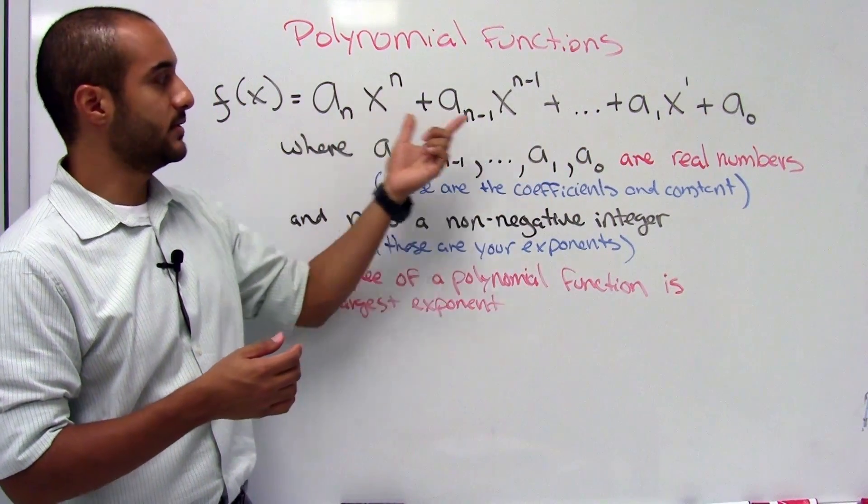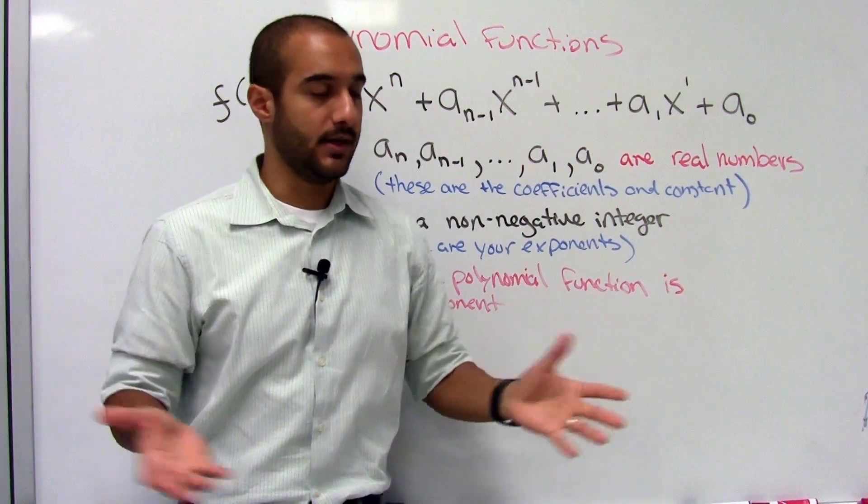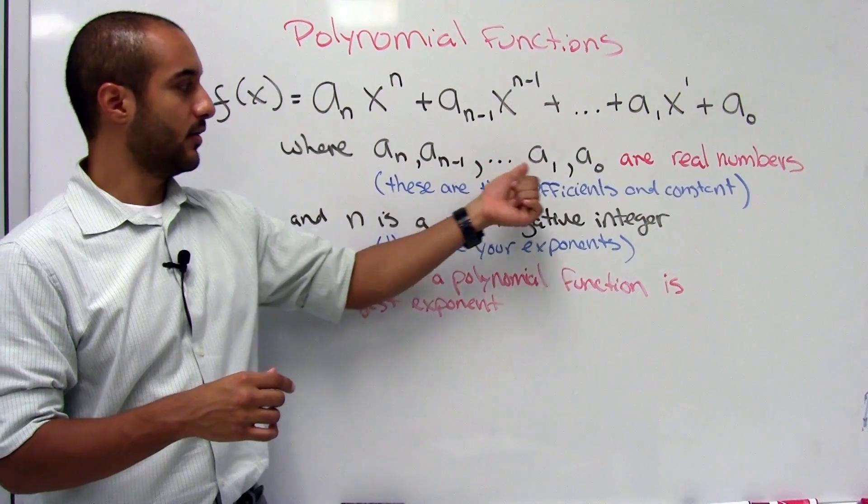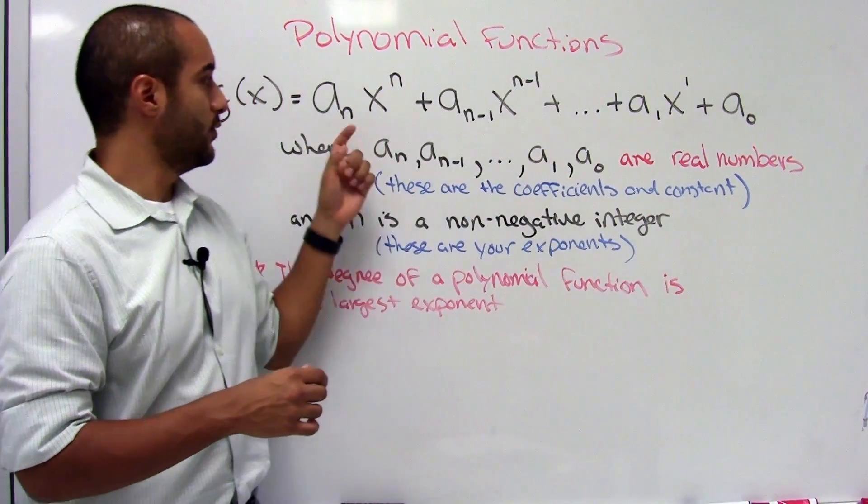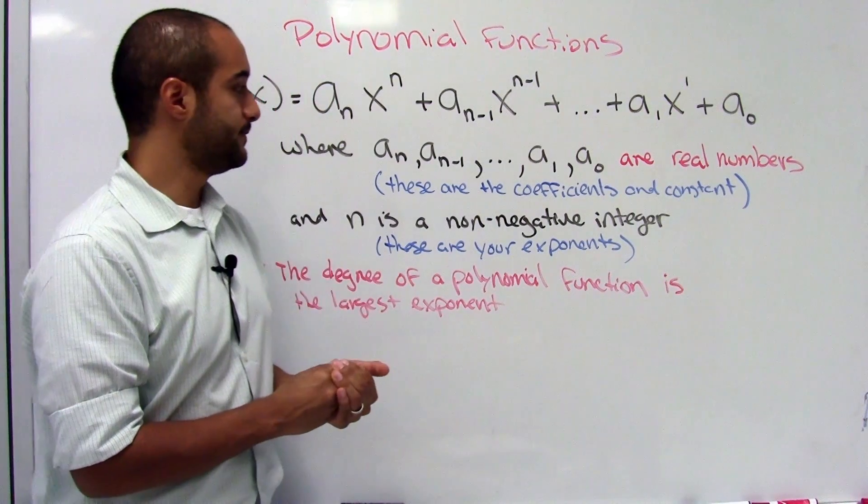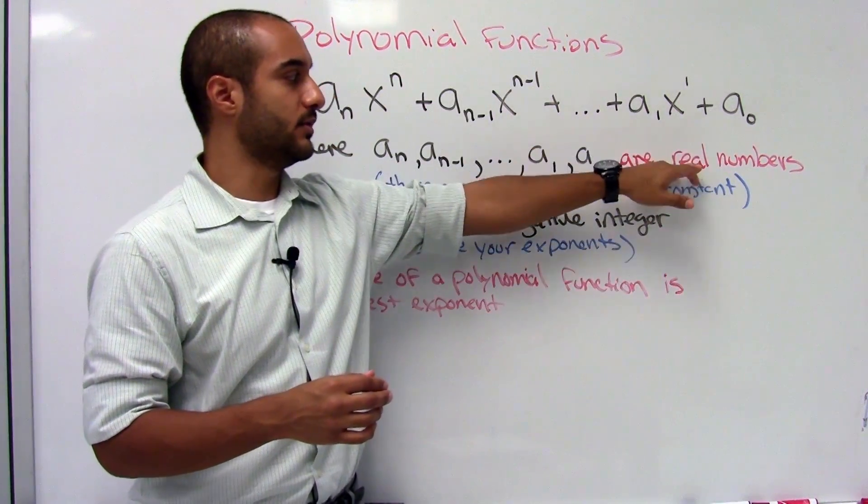Here what we actually have is a bunch of terms, and just saying that it can be as big as you need it to be, where a sub n and all following are real numbers. Notice that these are your coefficients, these are numbers that are in front of your variable, which also include your constant, so those are all real numbers.